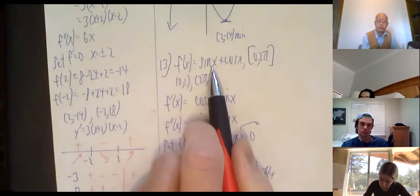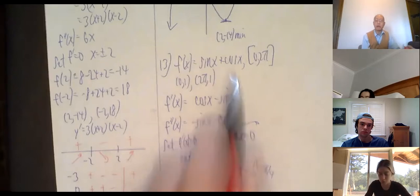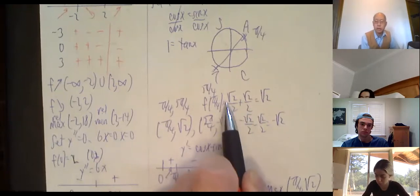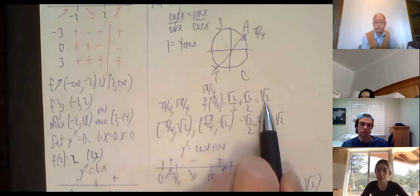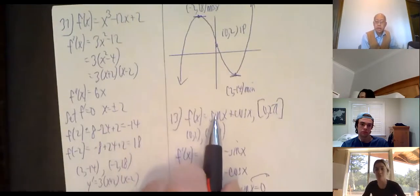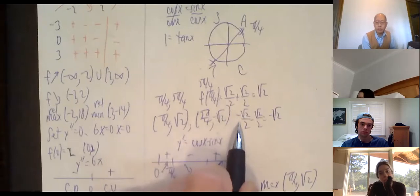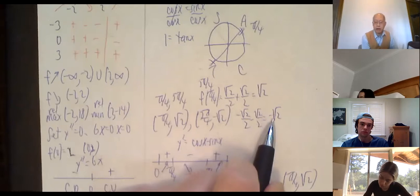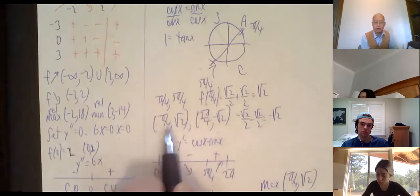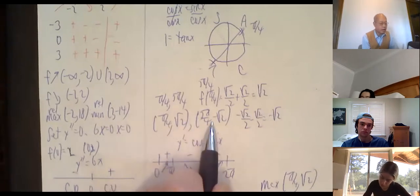Plug the critical numbers into the original function. f(π/4) = sin(π/4) + cos(π/4) = √2/2 + √2/2 = √2 ≈ 1.4. f(5π/4): both sine and cosine equal -√2/2 there, so f(5π/4) = -√2/2 - √2/2 = -√2. So the ordered pairs are (π/4, √2) and (5π/4, -√2).